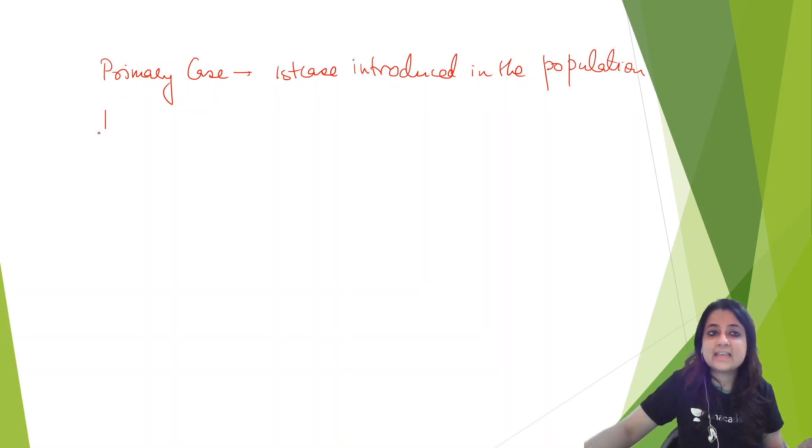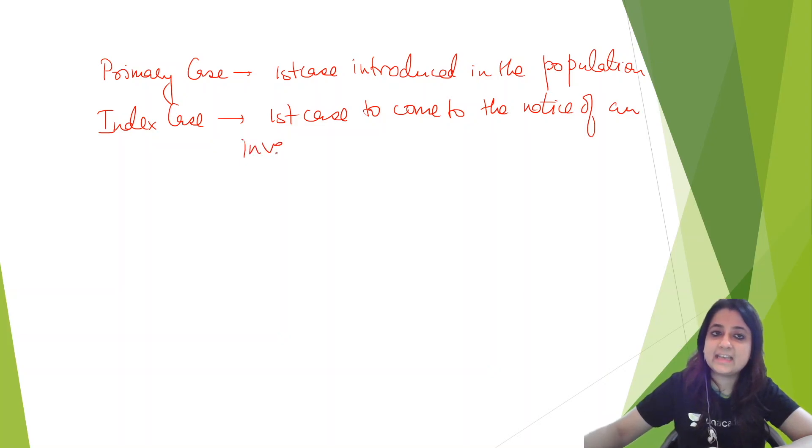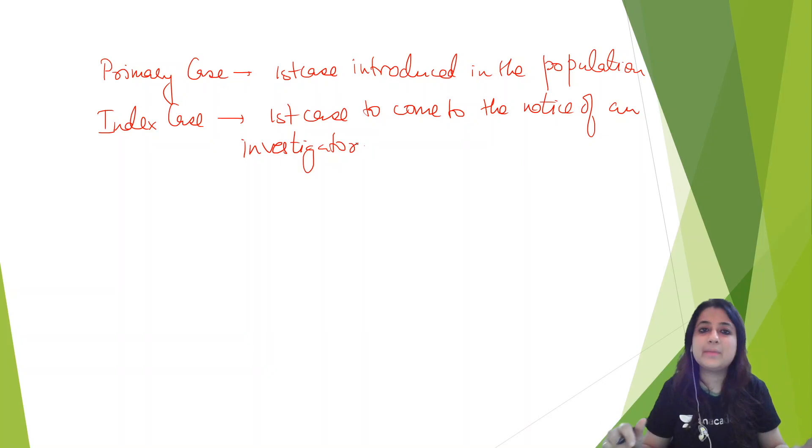What is index case? Index case is the first case that comes to the notice of an investigator. The primary case may not necessarily be the index case. Primary is the first case introduced of infectious origin. Index is the first case coming to the notice of an investigator, epidemiologist, whatever.